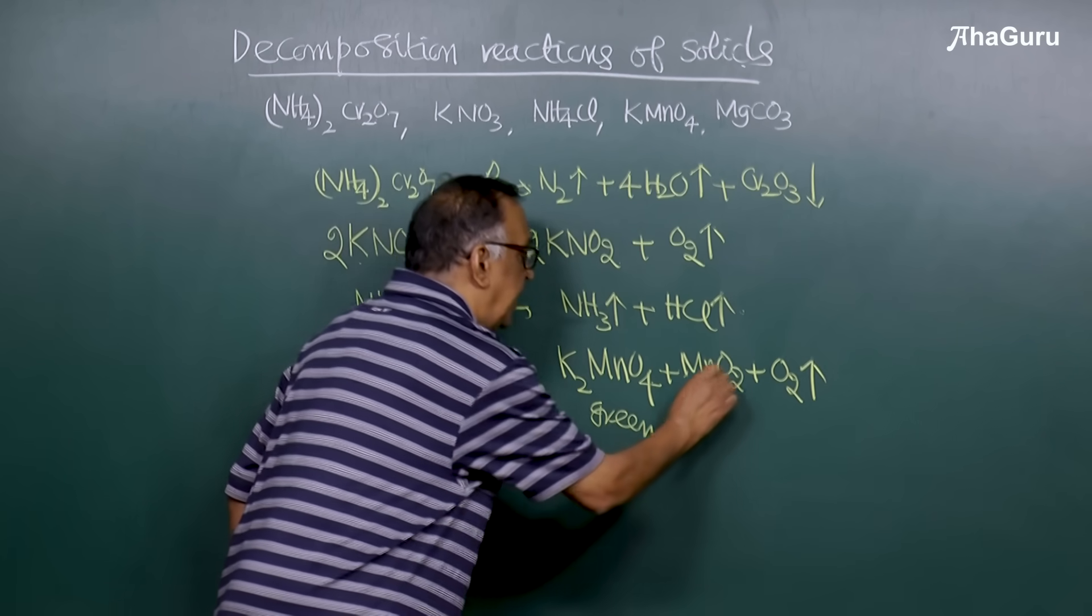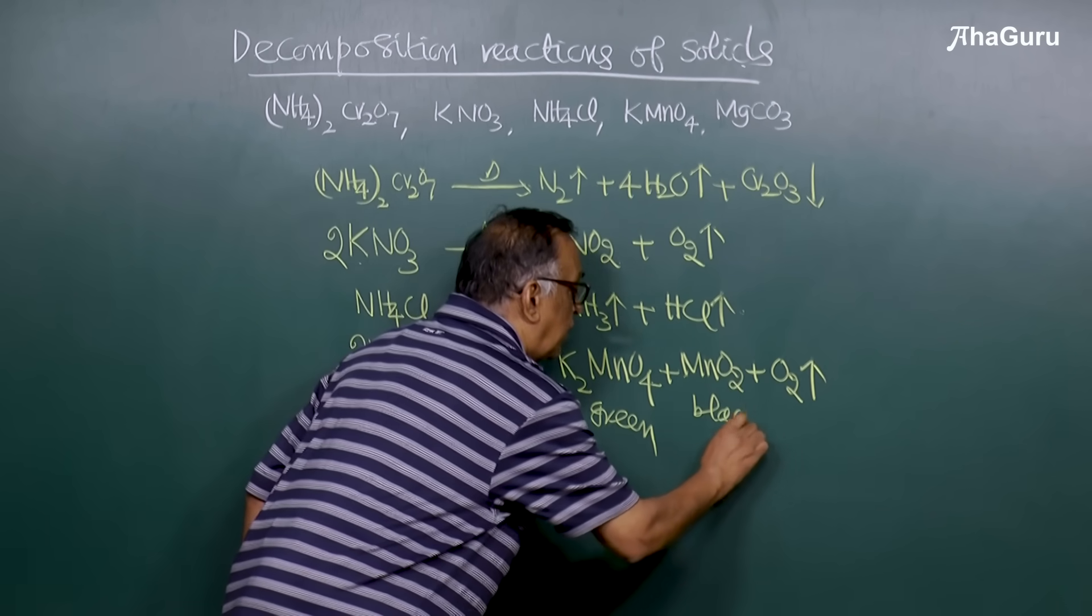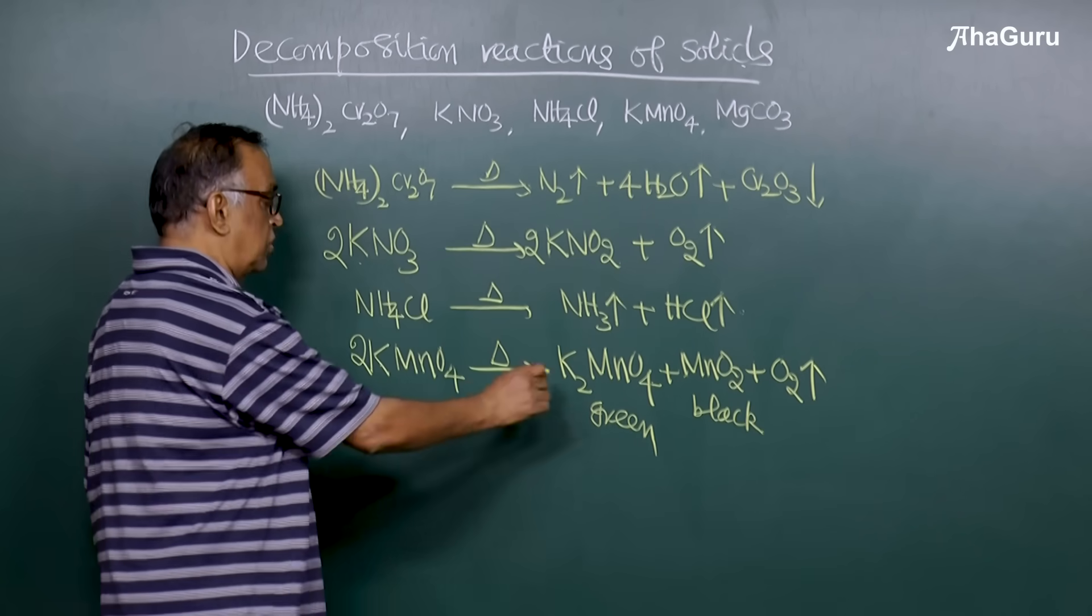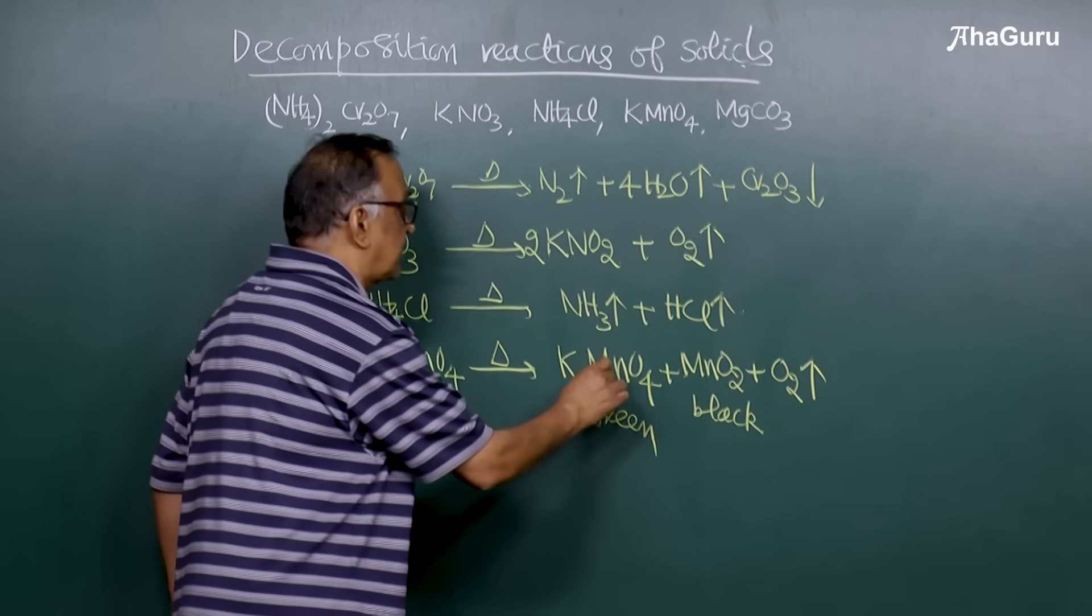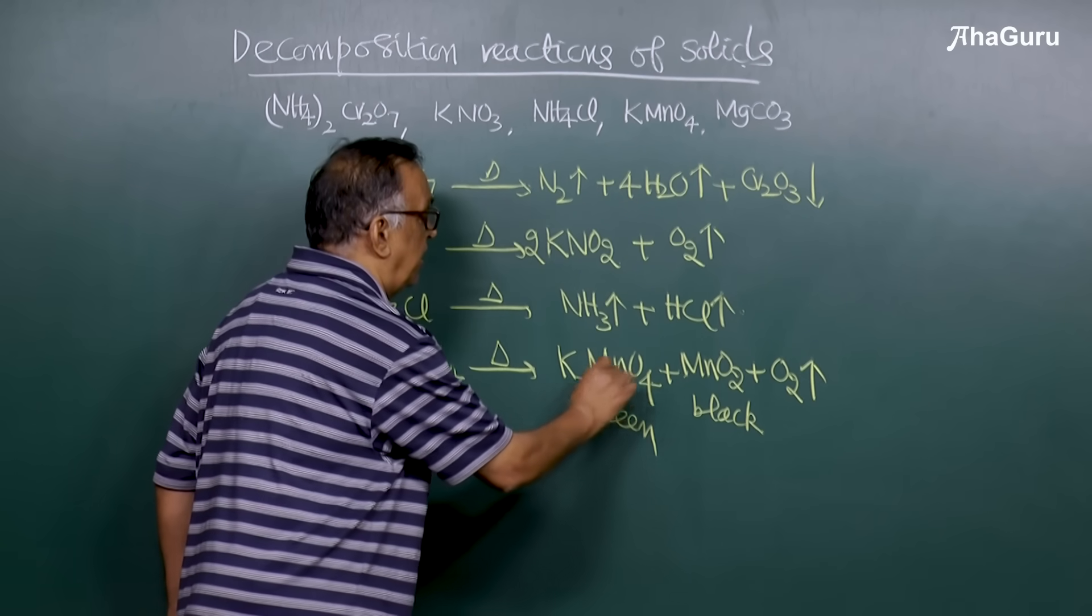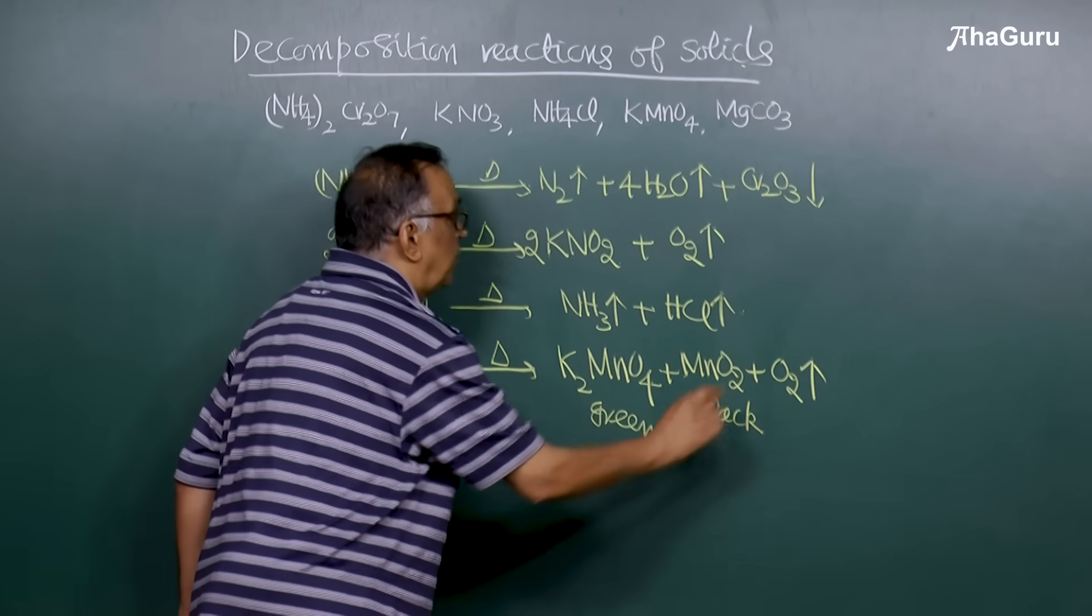MnO2 is a black solid along with oxygen. This leaves some residue. These two are residues.